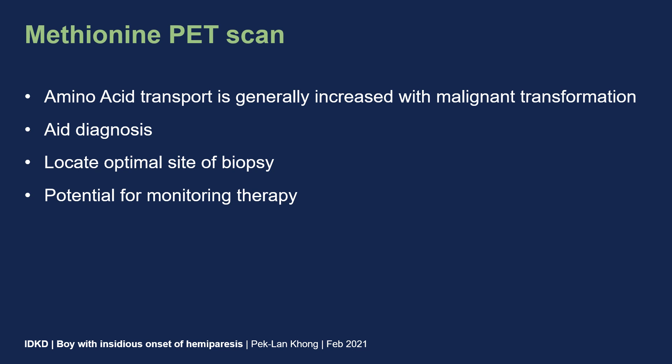Methionine is an amino acid PET tracer. Amino acid transport is generally increased with malignant transformation. It can aid diagnosis, as with other gliomas, and help locate the optimal site of biopsy. There is also potential for monitoring therapy, although more needs to be evaluated in this area. In this patient, the methionine PET scan was useful to aid diagnosis, especially in this situation where obtaining a biopsy was challenging.